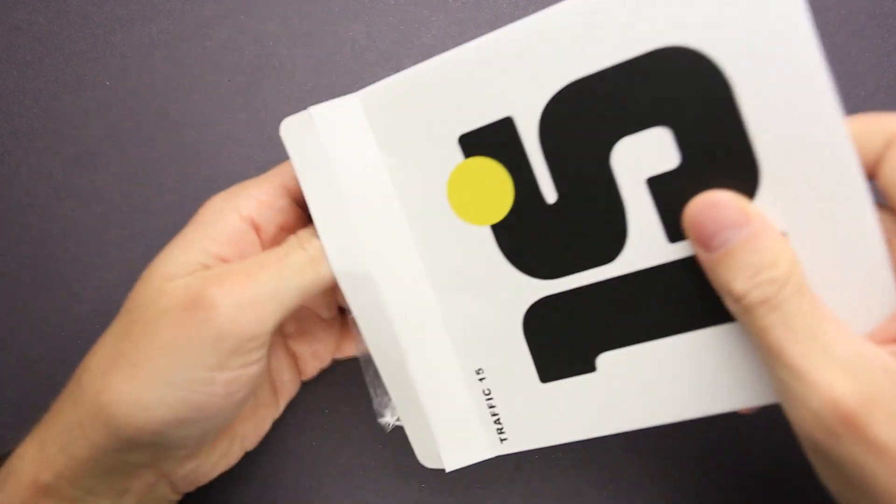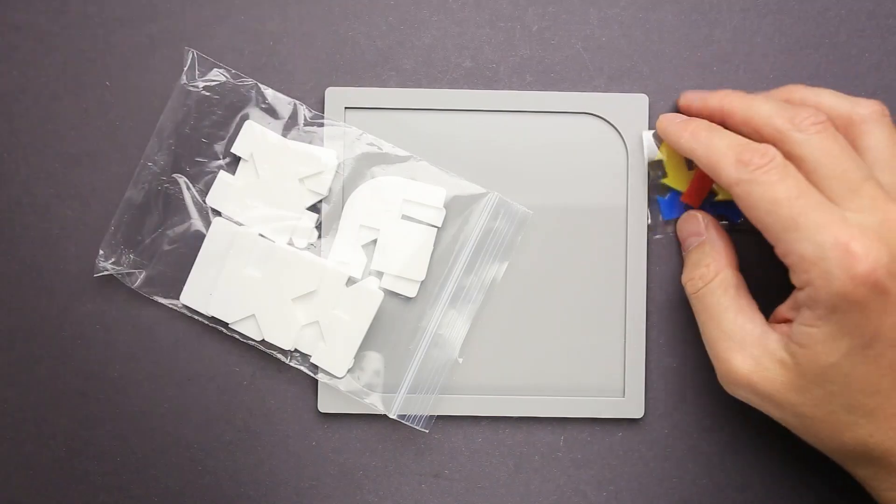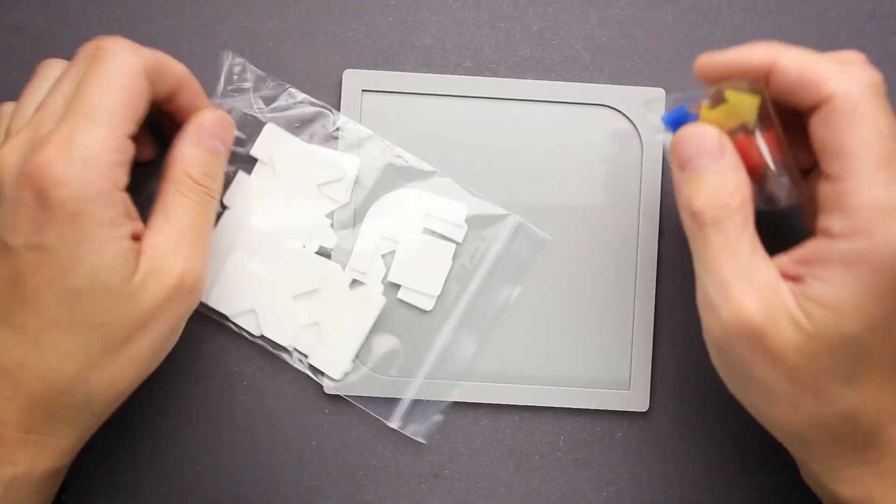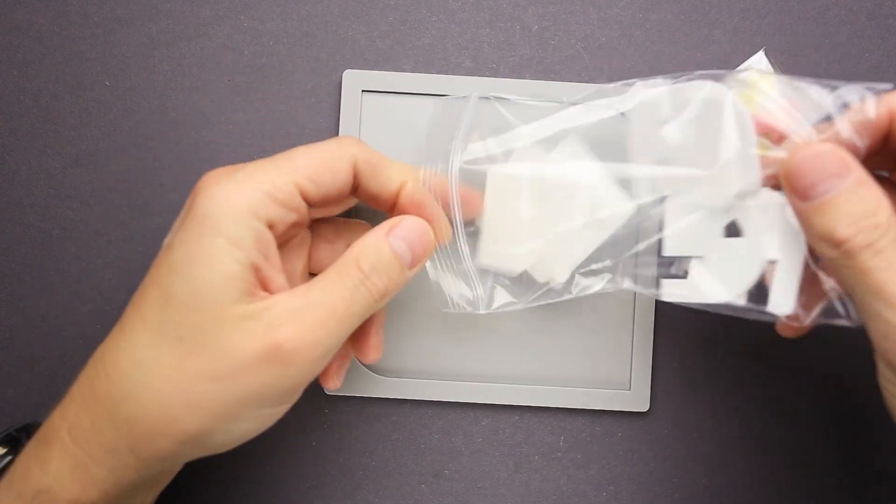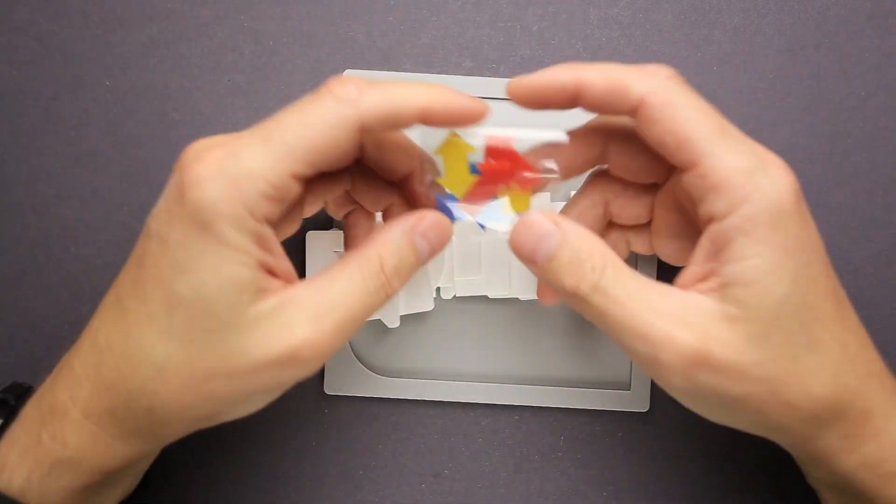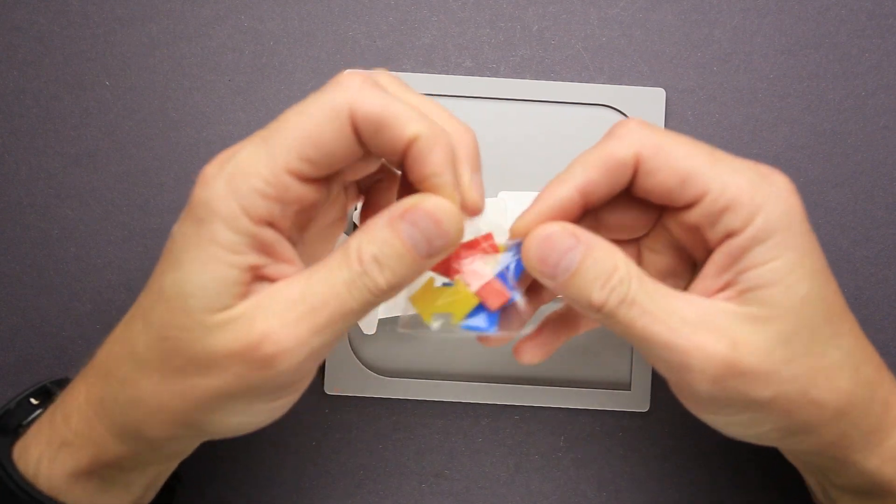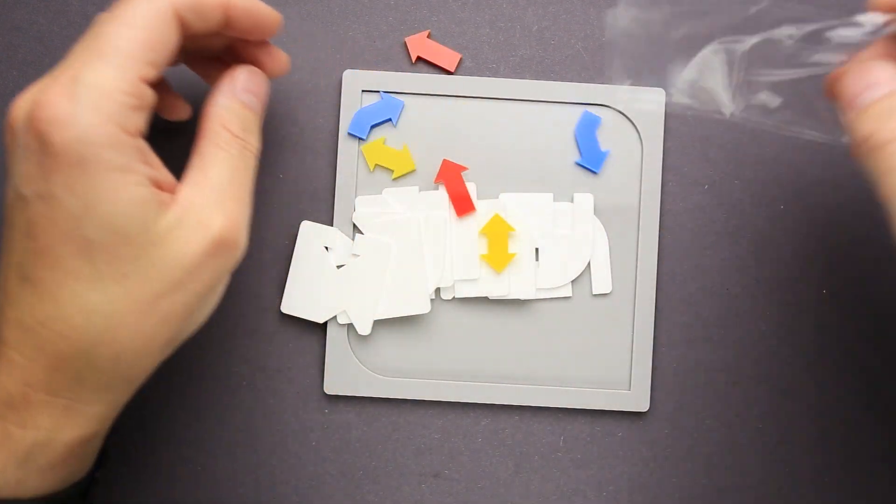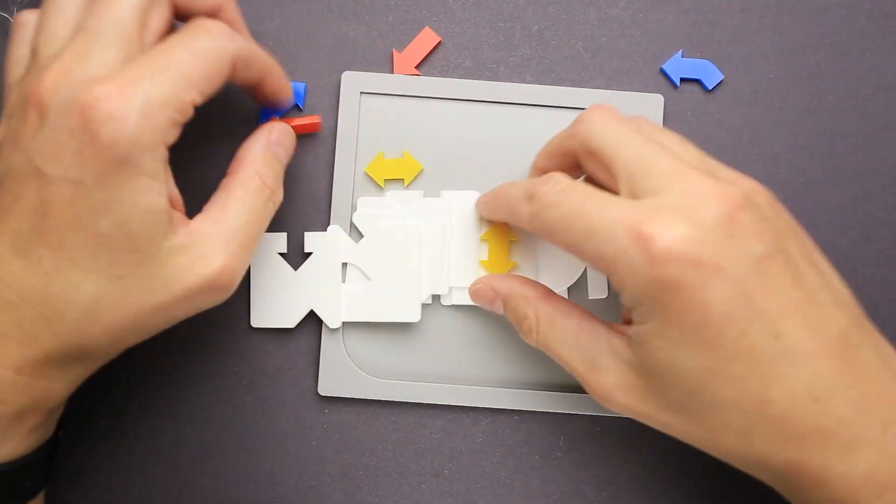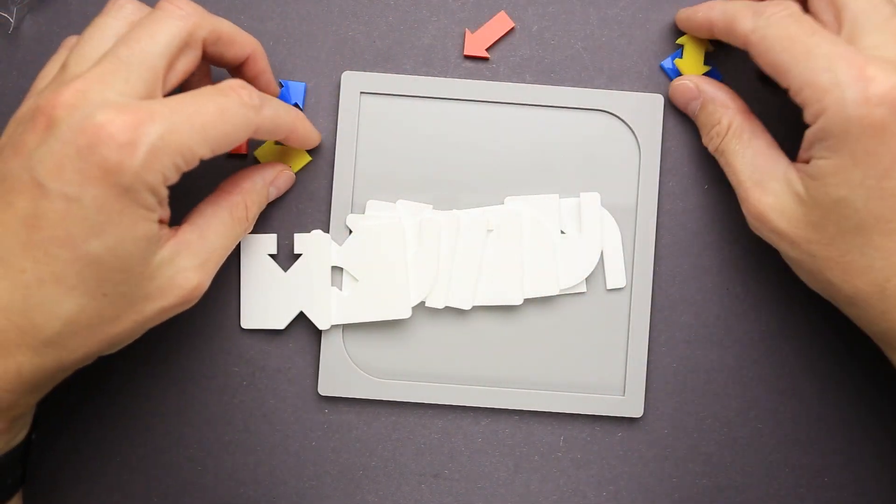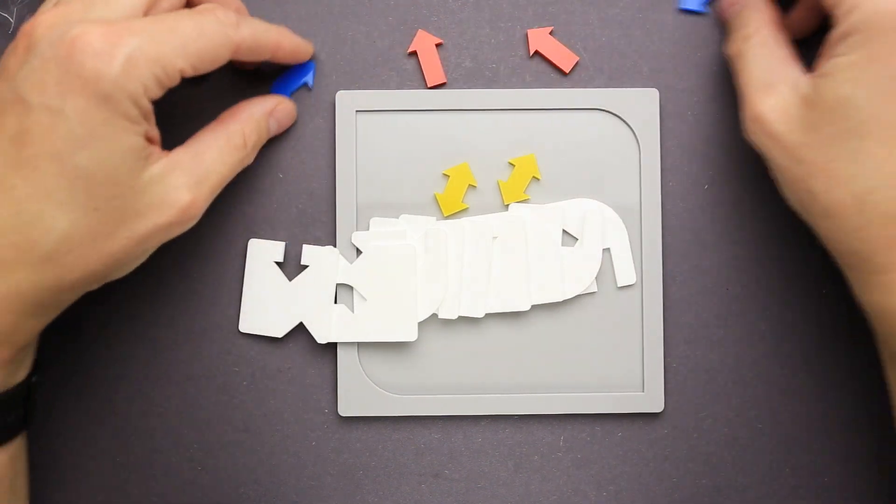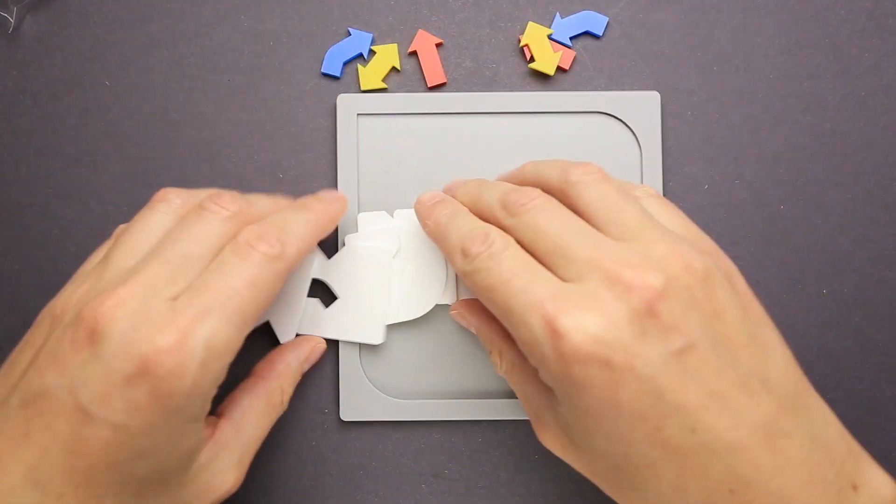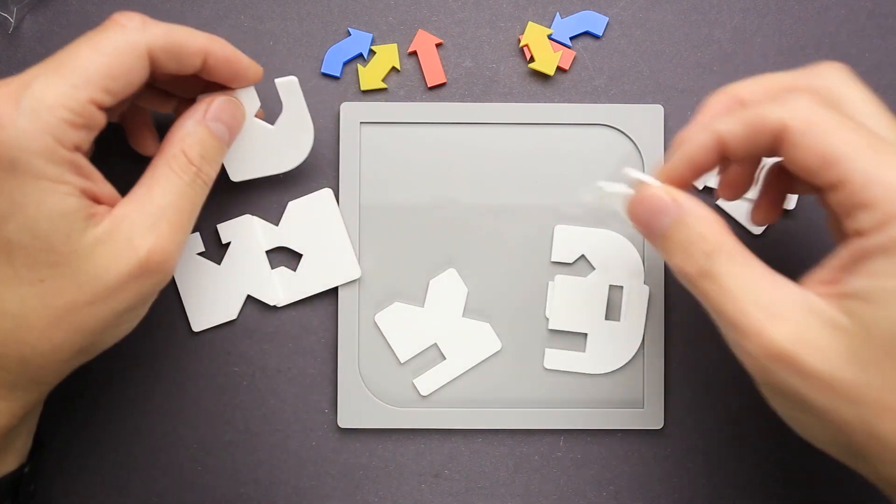Let's see what's inside. When I saw the photo of this puzzle online, I thought that it looks promising and I hope I won't be disappointed. So let's see. There are small parts, there are big parts and I have to fit all of them inside. There are two yellow arrows, two red arrows and two blue arrows. And we have nine parts here.